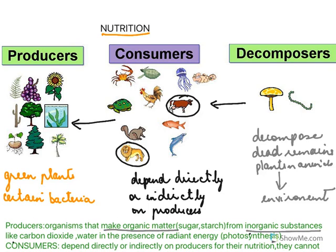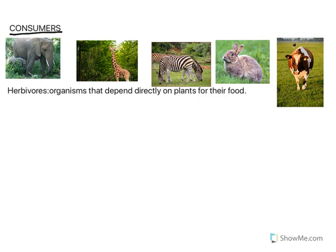Producers are organisms that make organic matter such as sugar and starch from inorganic substances like carbon dioxide and water in the presence of radiant energy through photosynthesis. Consumers depend directly or indirectly on producers for their nutrition. The consumers are further divided into types. First are herbivores — like elephants, giraffes, zebras, rabbits, and cows — which are grass-eating or plant-eating organisms that depend directly on plants for their food.